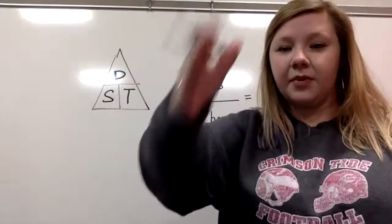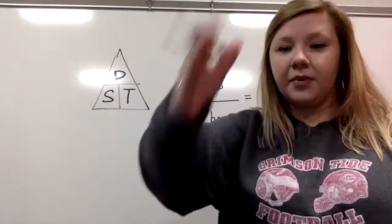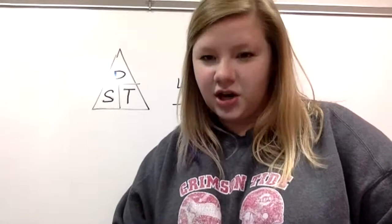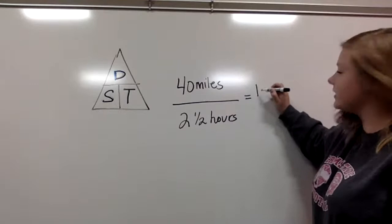If Ben G was traveling 40 miles in two and a half hours, remember my triangle — if I'm trying to find speed, I hide the S and do D divided by T. So I'm going to do 40 divided by two and a half. Verena says she knows the answer, so post it down there in the comments. Kira got it, Dalton got it, Jalen got it, Chase got it. Verena, good job — 16 miles per hour.